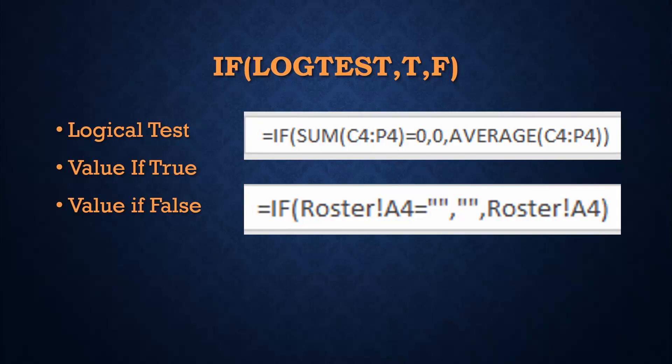That's actually a student's name. When I do a spreadsheet for my class, I have a template with about 20 to 25 student spaces. I may not have 25 students in my class, so instead of having errors and weird things showing up, this keeps it clean. Also, in older versions of Excel, if you do the average of a series of numbers and there are zeros in those cells, it would give you an error. That formula actually fixes that problem.